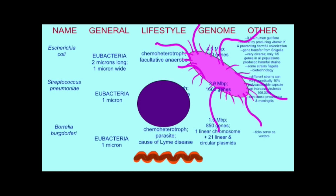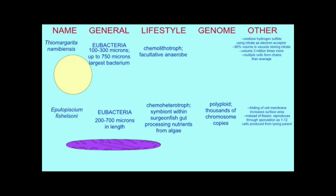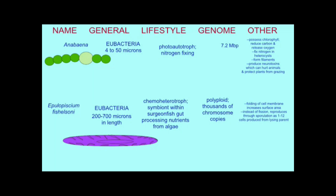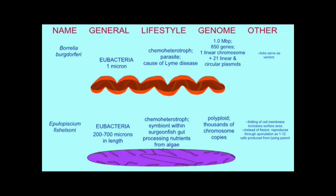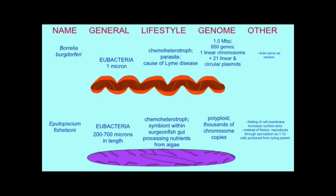Well, first it needs to be said that prokaryotes are far more diverse than most of us appreciate, or that anyone fully understands. For example, some are quite large, larger than many eukaryotes. Some eukaryotes are quite small. There is certainly great variation in complexity, with some prokaryotes having an infolding of their cell membranes, or even a membrane around their DNA, features which we often associate only with eukaryotes.